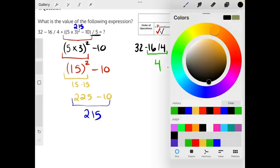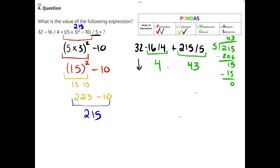And now we can rewrite our expression once again, 32 minus 4 plus 43.